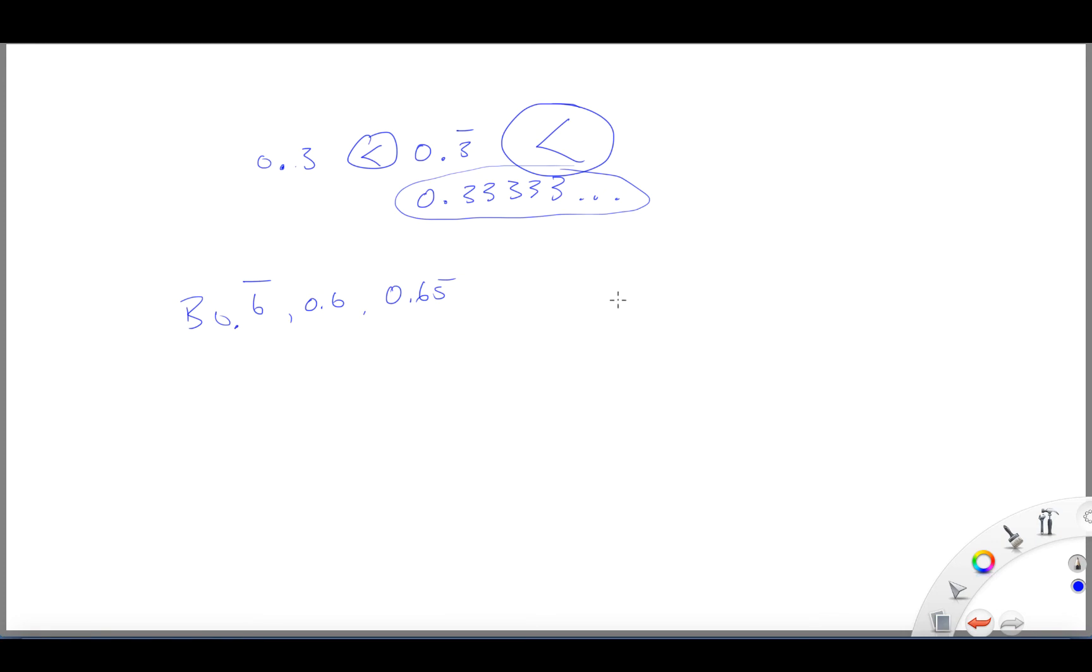Alright, a couple things to do. If we did this, if we wrote them all in order, okay, 0.66666 and repeating. If we did 0.6 and then 0.65, we would understand a little bit by the arranging of this, how it works.